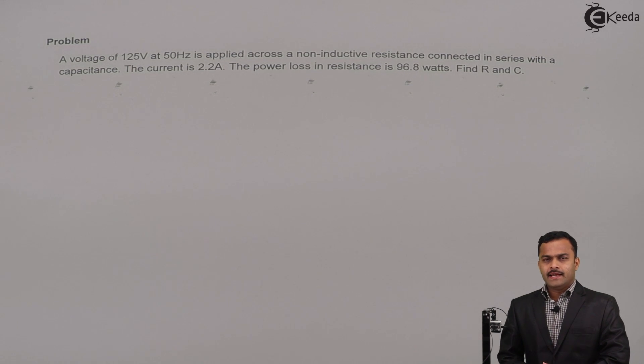Hello friends, in this video we are going to see a problem based on RC series circuit. A voltage of 125 volt at 50 Hertz is applied across a non-inductive resistance connected in series with a capacitance. The current is 2.2 ampere. The power loss in resistance is 96.8 watts. Find R and C.